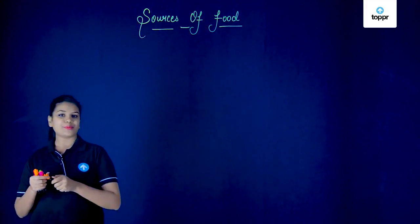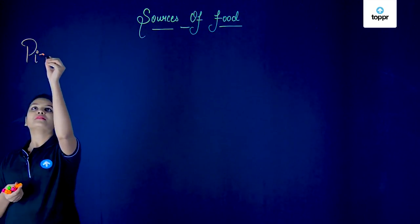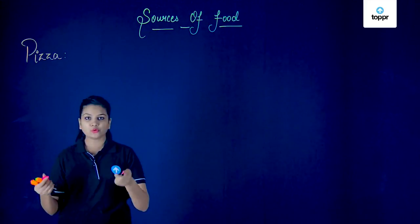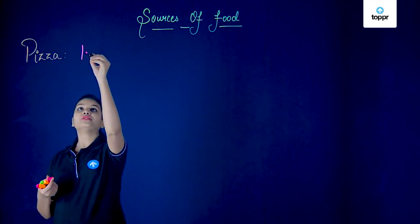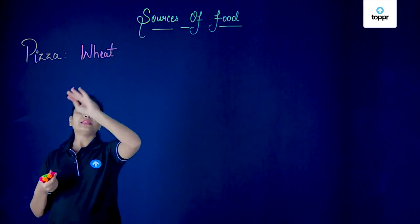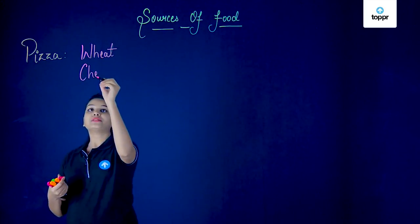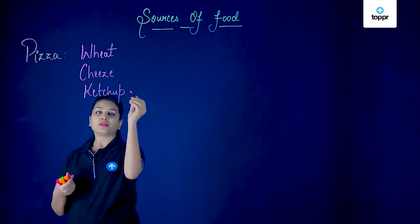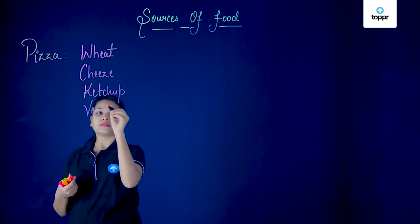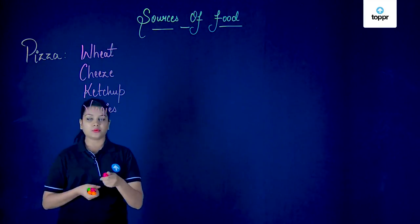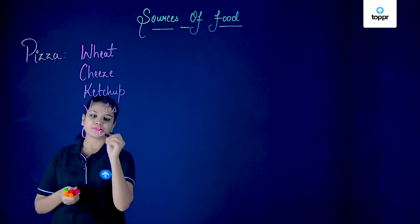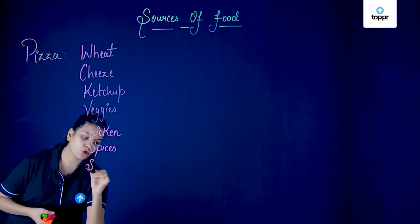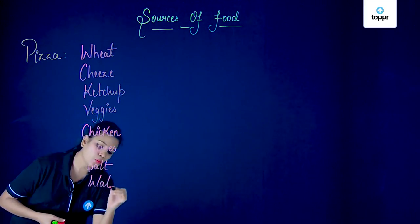So here we will see pizza. What are the various ingredients of pizza? The first thing you need is dough to make a pizza base, and this dough is mainly made with the help of wheat. Next, you add some cheese, along with some ketchup. You can also have a number of veggies. You may also add some chicken, and then we have a number of spices, some salt and water as well.